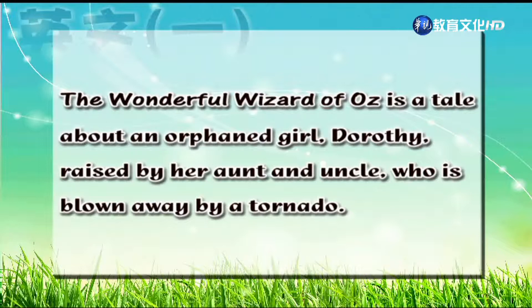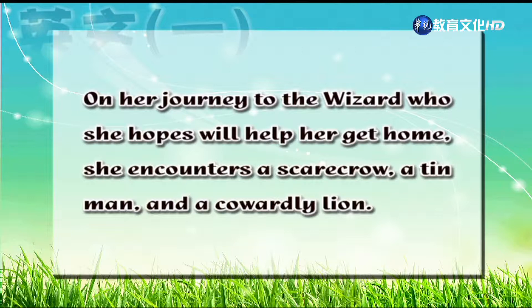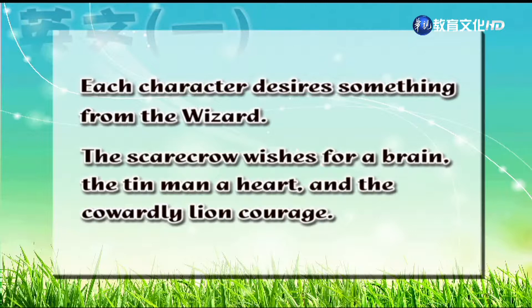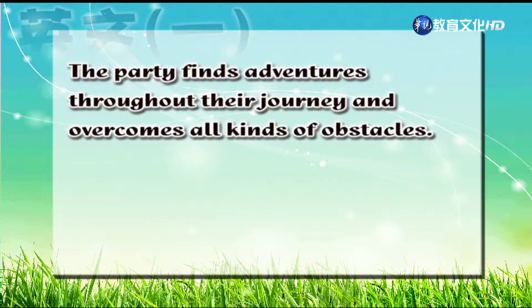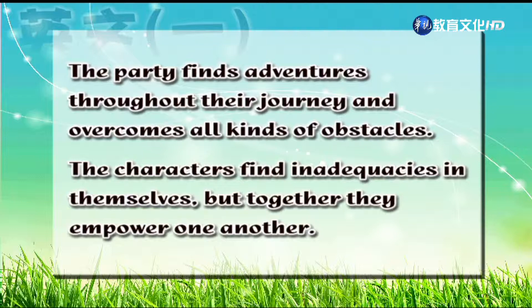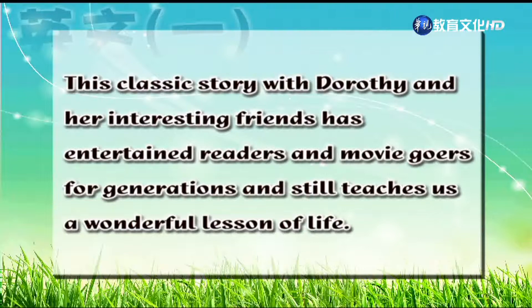Now let's take a look at the last paragraph. The Wonderful Wizard of Oz is a tale about an orphaned girl, Dorothy, raised by her aunt and uncle, who is blown away by a tornado. On her journey to the wizard, who she hopes will help her get home, she encounters a scarecrow, a tin man and a cowardly lion. Each character desires something from the wizard. The scarecrow wishes for a brain, the tin man a heart, and the cowardly lion courage. The four travelers reveal the true identity of the Wizard of Oz, who eventually gives them what they each desire. The party finds adventures throughout their journey and overcomes all kinds of obstacles. The characters find inadequacies in themselves, but together they empower one another. The classic story with Dorothy and her interesting friends has entertained readers and moviegoers for generations, and still teaches us a wonderful lesson of life.